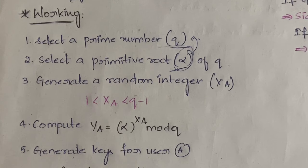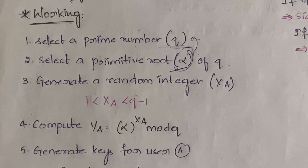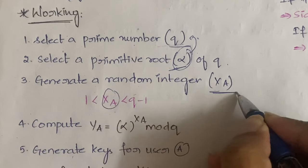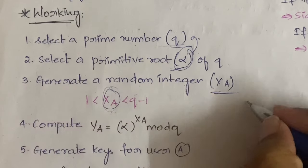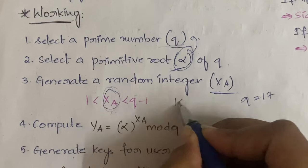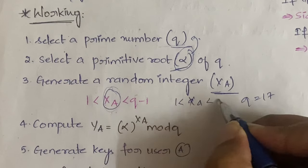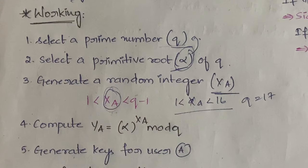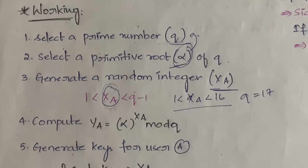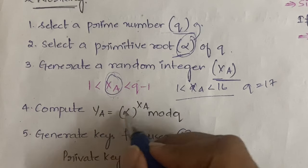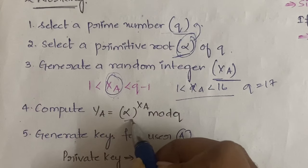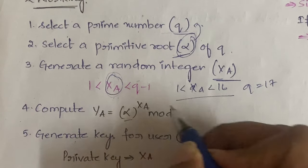After selecting the primitive root, you need to generate a random number denoted by xa, where xa lies between 1 and q minus 1. For example, if you selected q as 17, then xa should be between 1 and 16. Next, you compute ya: ya = alpha^xa mod q, where alpha is the primitive root, xa is the random number, and q is the prime number.